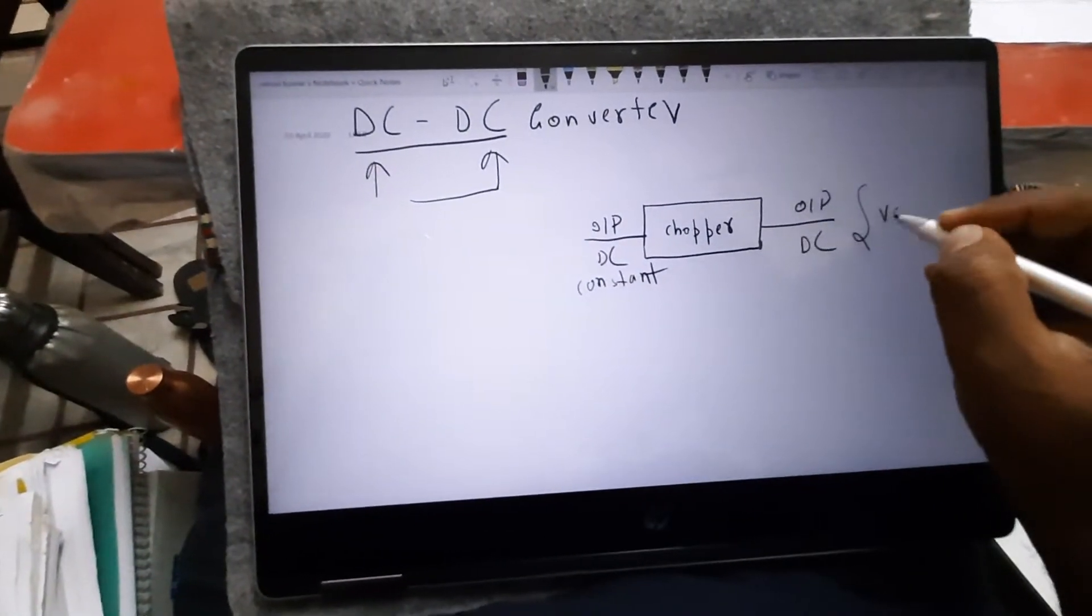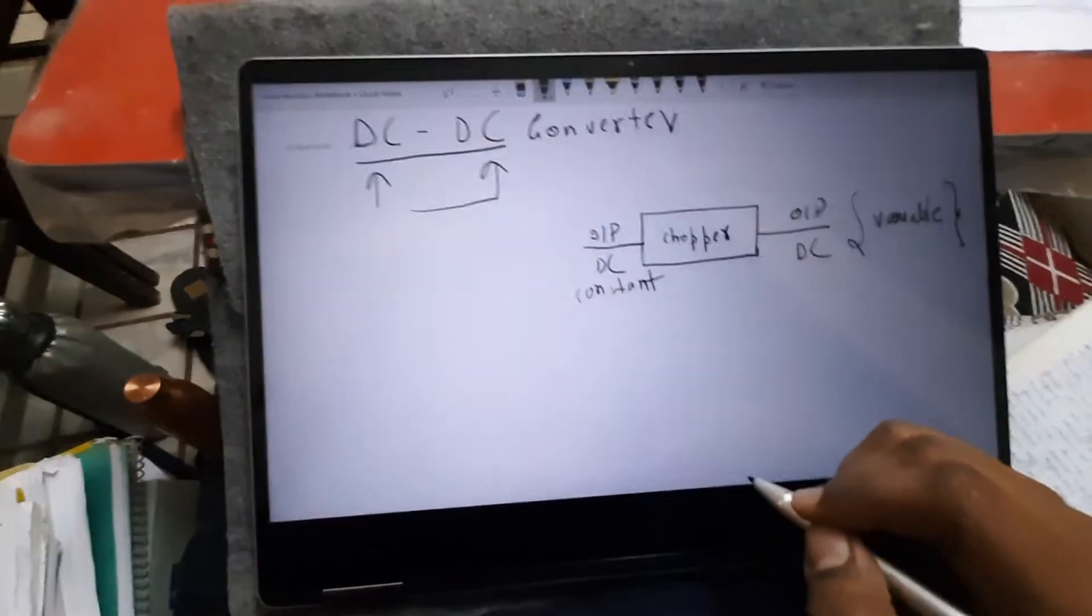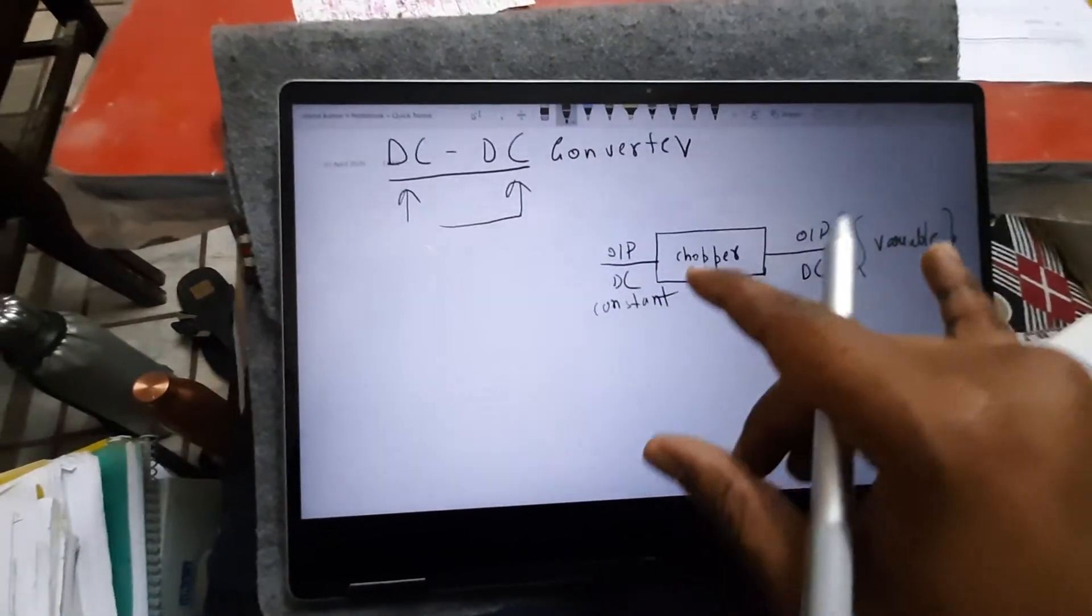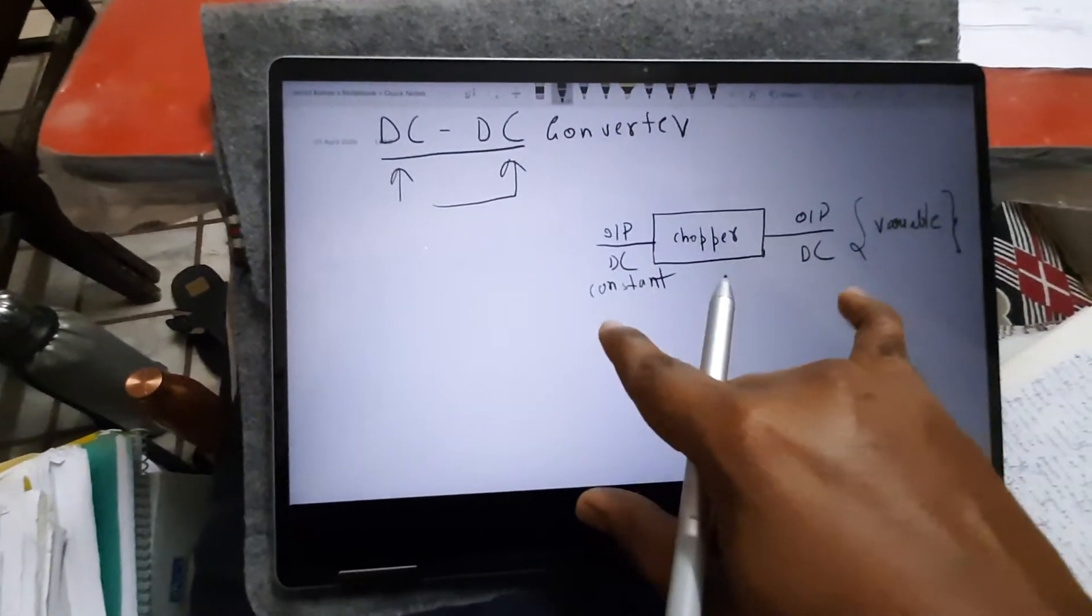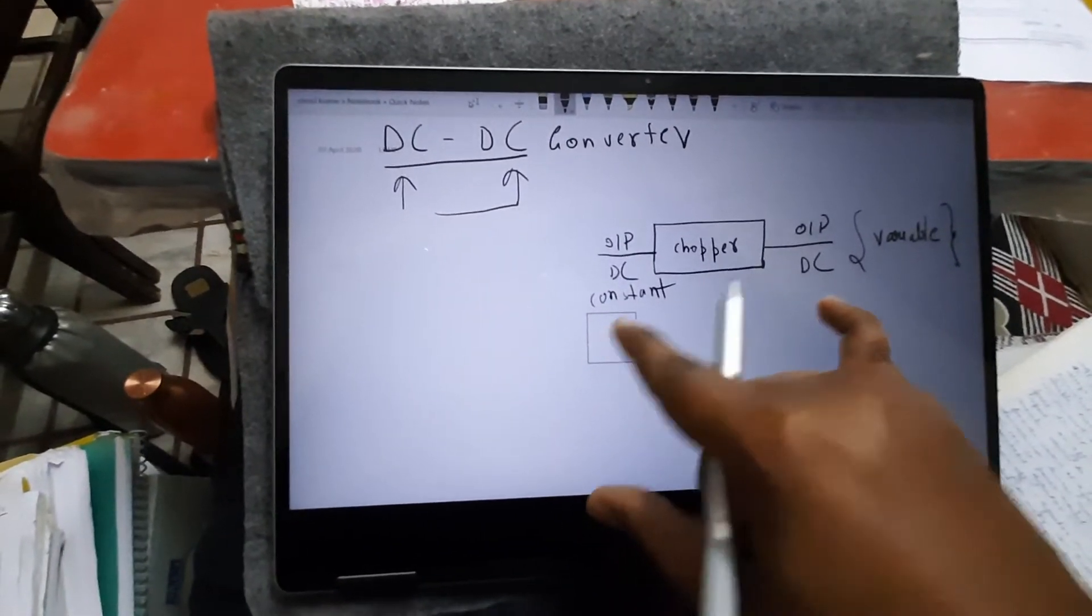And we are getting the variable DC output. So basically it is a converting device where at one side we are feeding the constant DC and at the output side we are getting the variable DC.